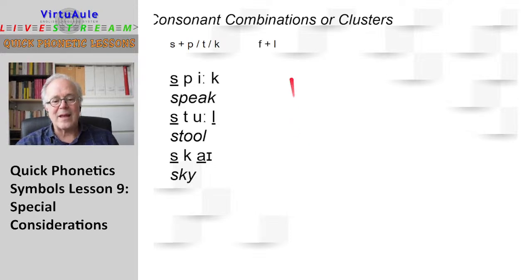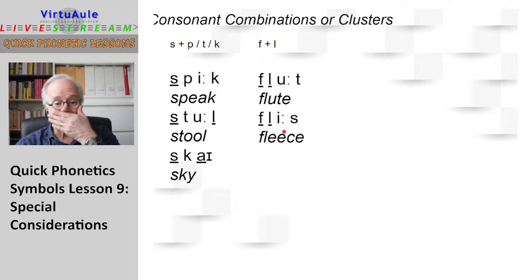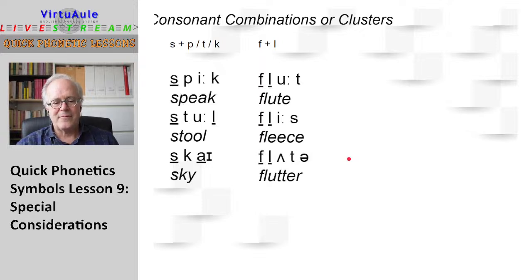Now we'll look at the F with L sound — words like 'flute'. Very difficult. Flute. Practice that. Fleece. Both sounds are long — the F is long, the L is long, the I is long, the S is also long. It's not underlined, but it's all long in this word. Flute.